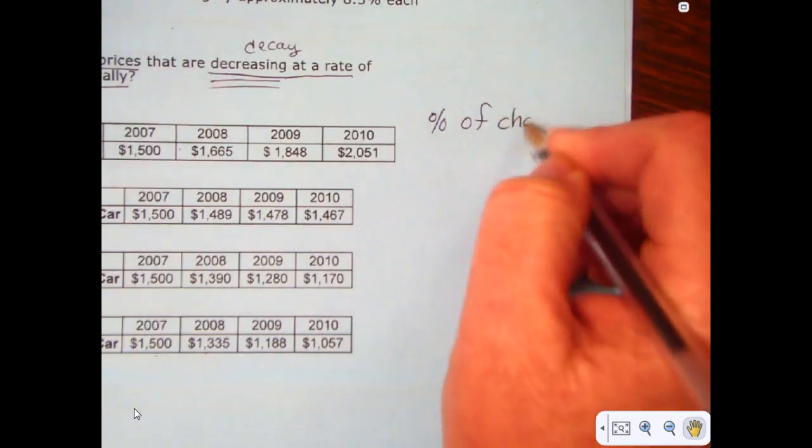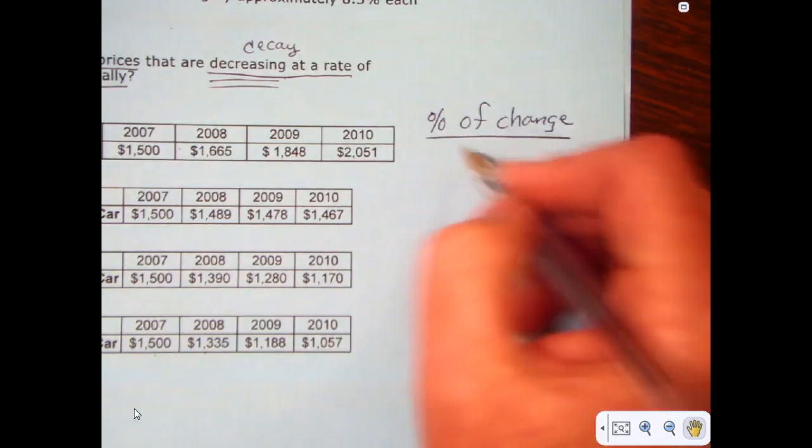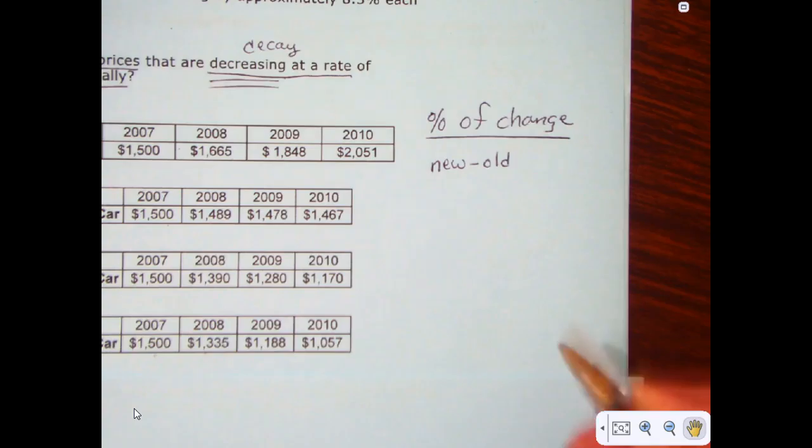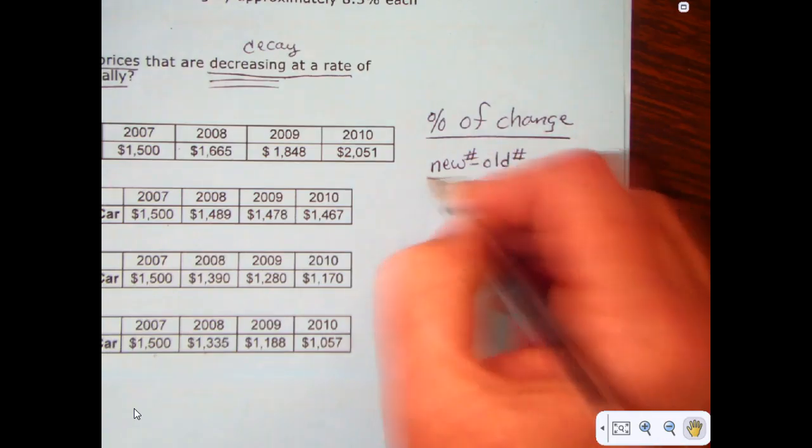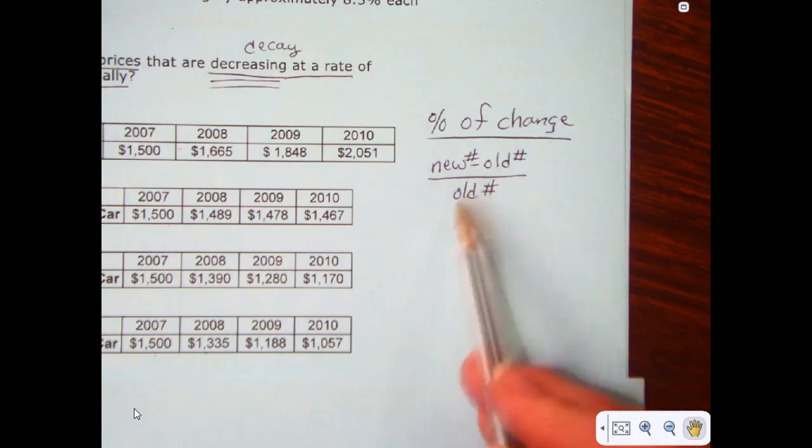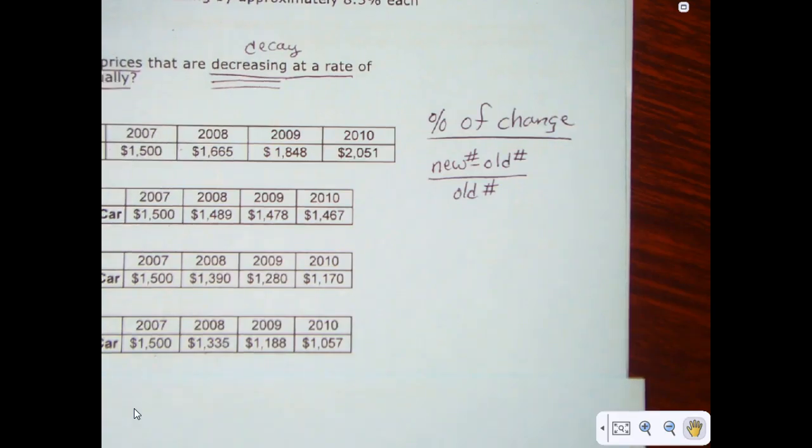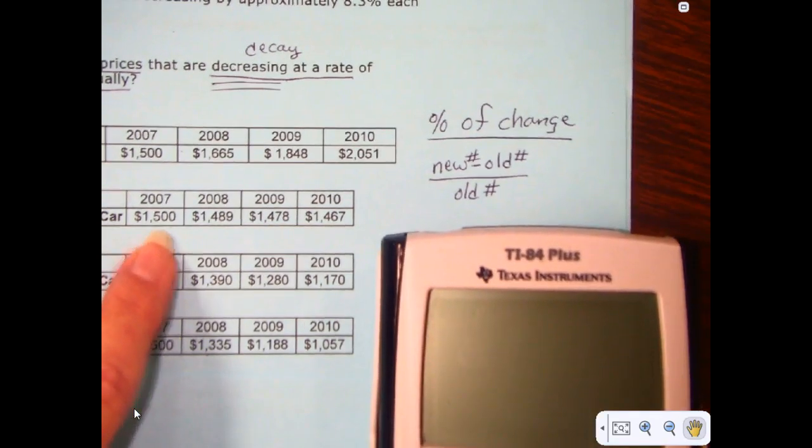I need to look at percent of change. Let me come over here and give you some information on percent of change. Percent of change is the new minus the old, and this is just another way of saying it. The new number, the new price minus the old price divided by the old price. The new price minus the old price divided by the old price. Some might say the end minus the beginning divided by the beginning, but that's how we find our percent of change. How much of a percent something is growing or decreasing.